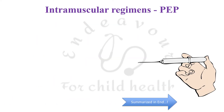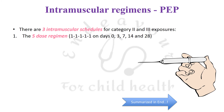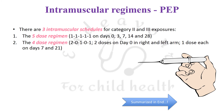For intramuscular regimens for post-exposure prophylaxis, there are three schedules. The first is the five-dose regimen: a single dose of vaccine administered on days 0, 3, 7, 14, and 28 — where day zero is the day of the first vaccine dose. The second is the four-dose regimen: two doses on day zero given in the right and left arms, and one dose each on day 7 and day 21.